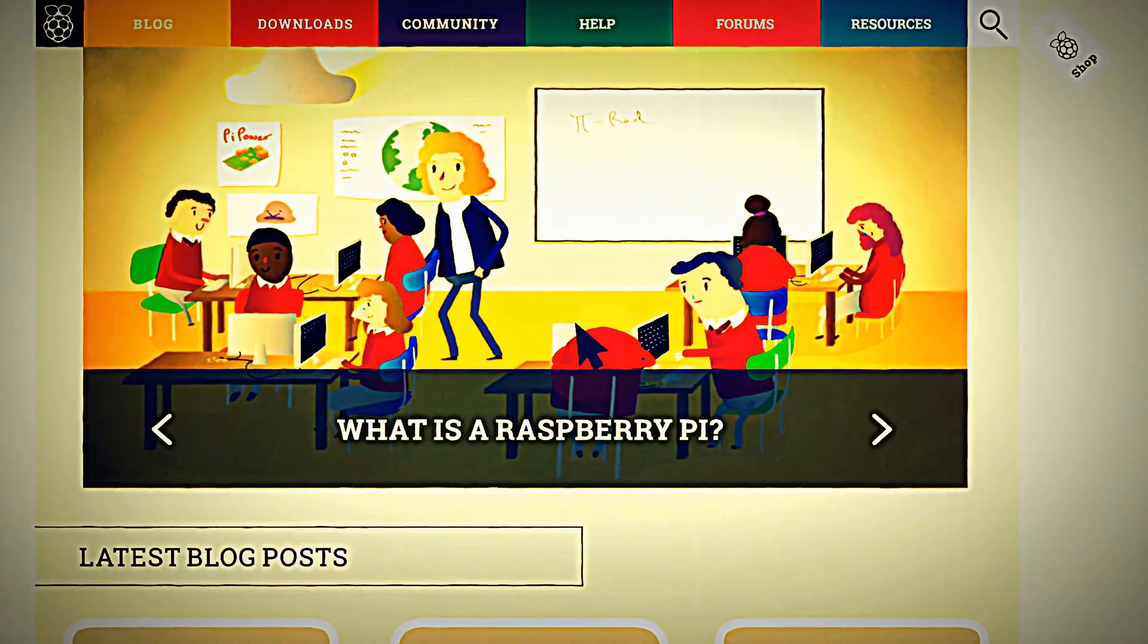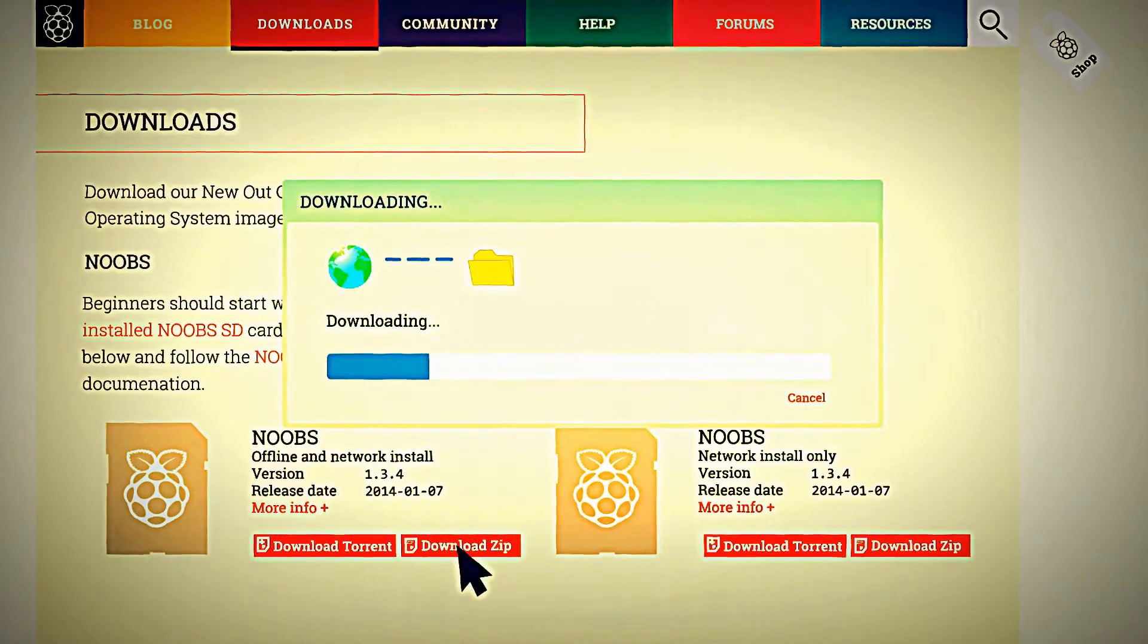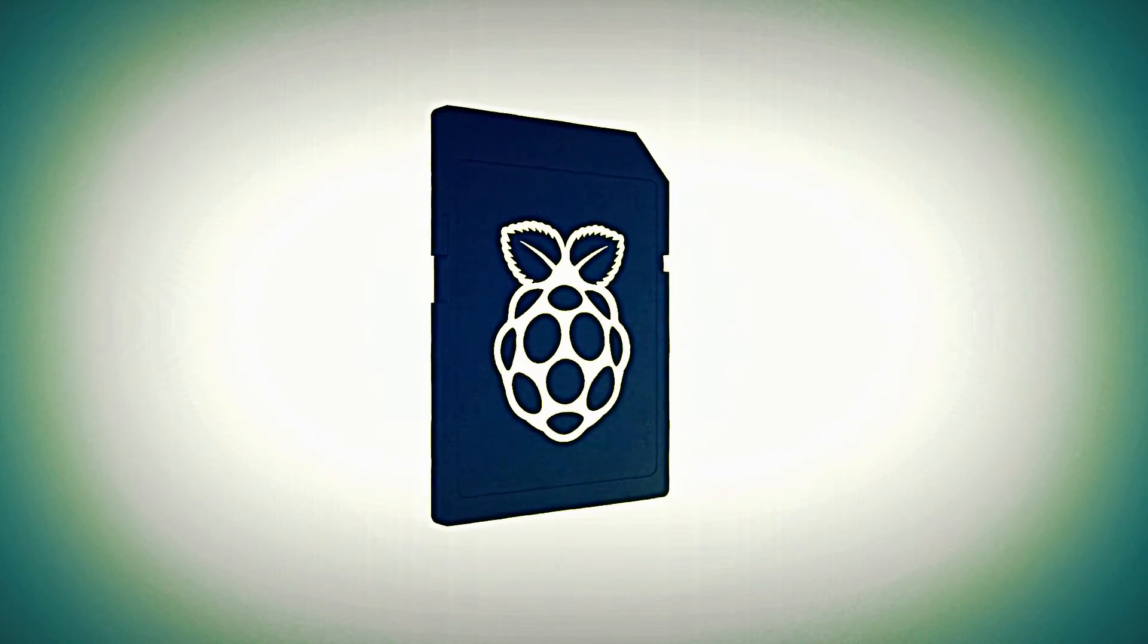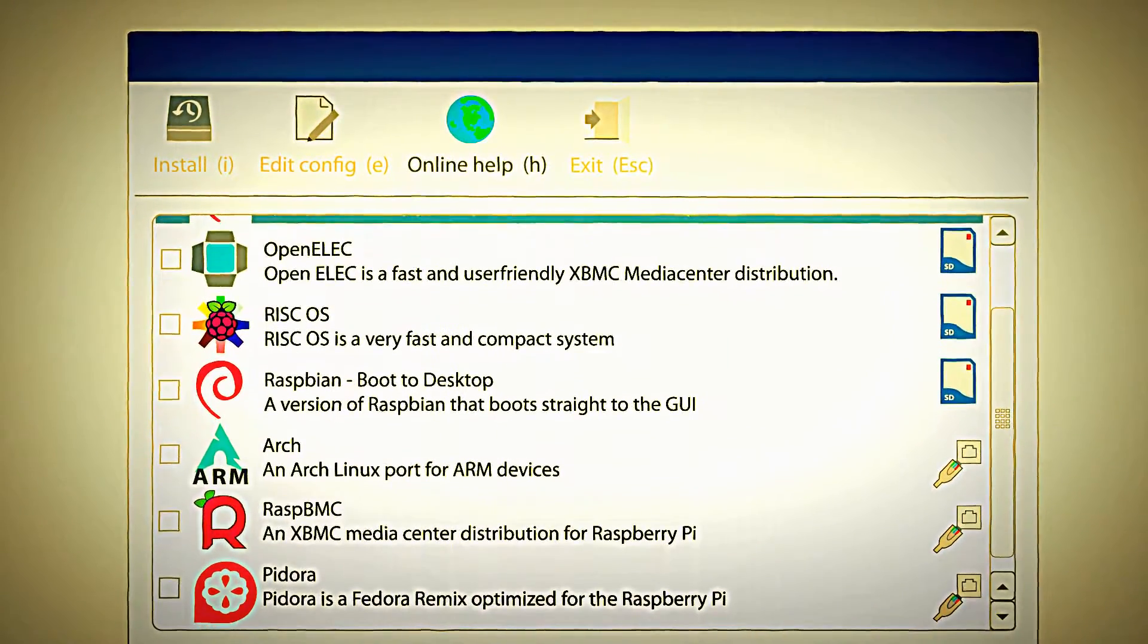You can download your operating system for free from the Raspberry Pi website. If you want to get started even quicker, you can buy a Noobs card, which comes preloaded with a choice of operating systems for everyone, from beginners to experts.